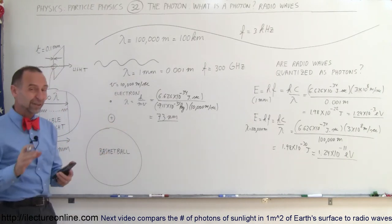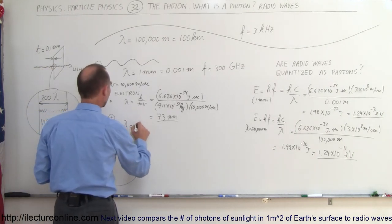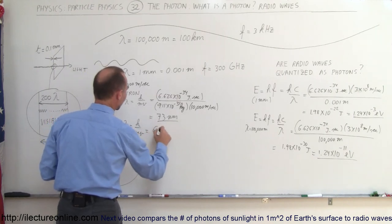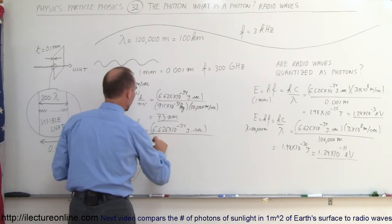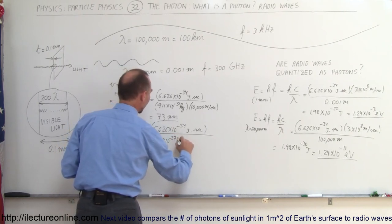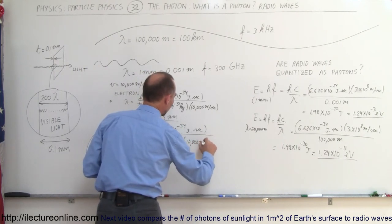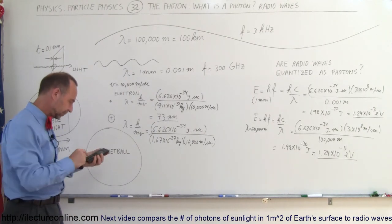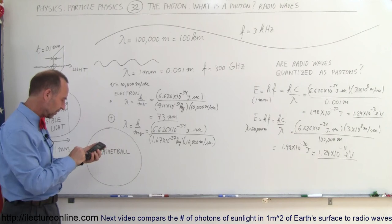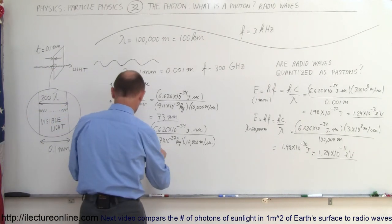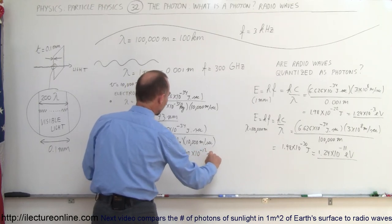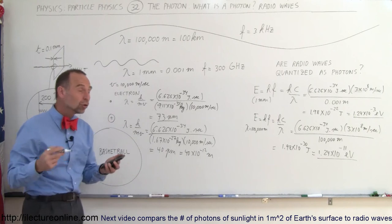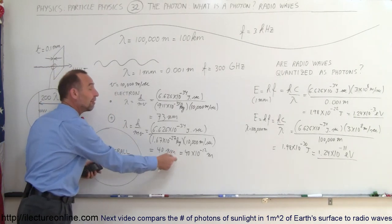If we do the same calculation for a proton moving at that speed, the wavelength equals h/mv: 6.626 × 10⁻³⁴ joules·seconds divided by the proton mass of 1.67 × 10⁻²⁷ kilograms, times 10,000 meters per second. That gives a wavelength of about 40 picometers — 40 × 10⁻¹² meters — which is about one-thousandth the wavelength of an electron. That would be a very difficult wavelength to measure.